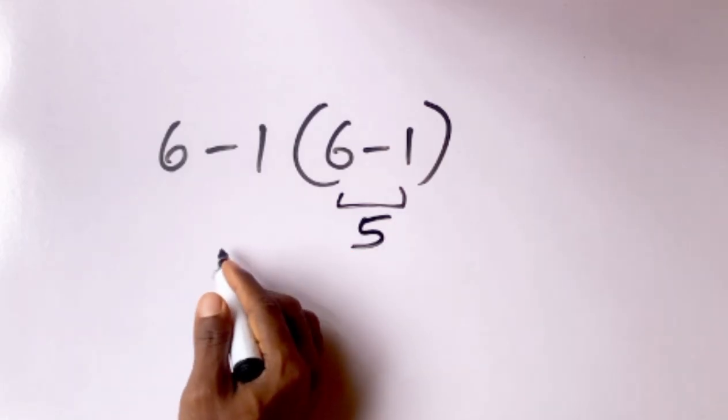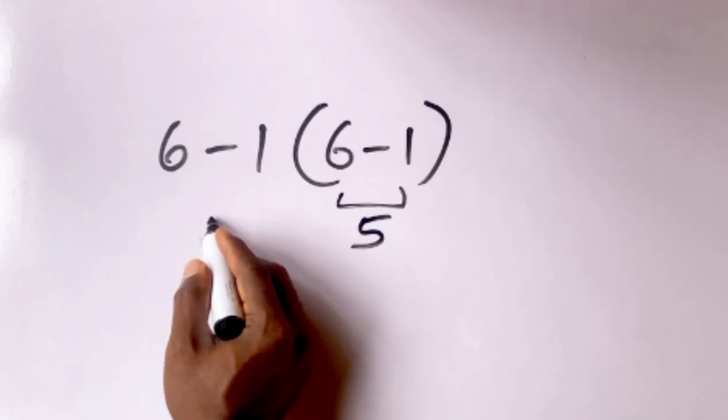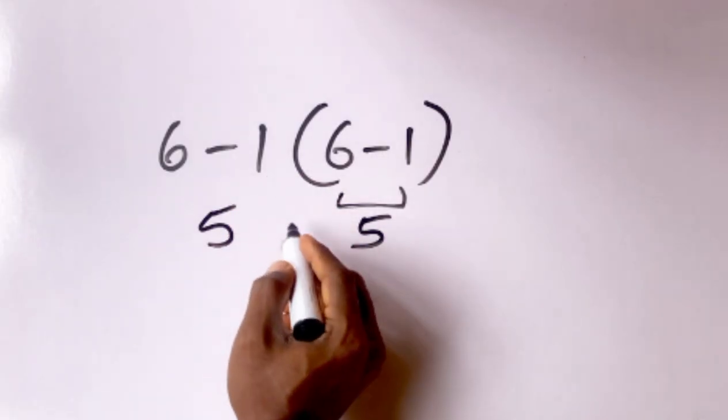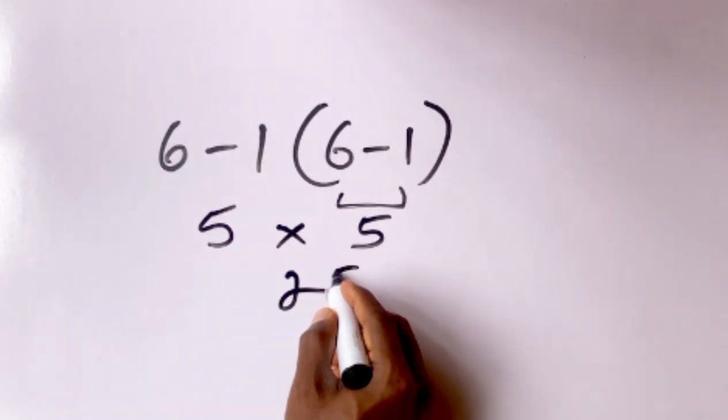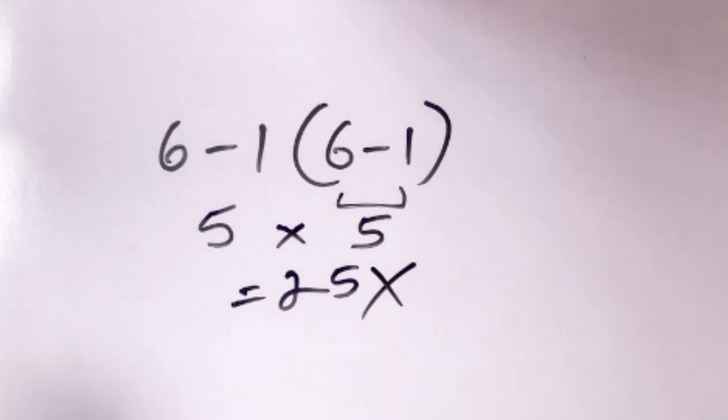5. 6 minus 1 is what? 5, times 5, 25. But this answer is not correct.